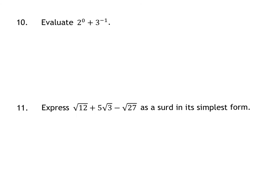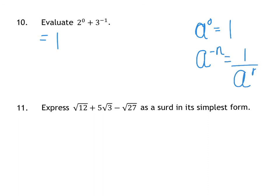Question 10 is an indices question. The first part uses the rule that A to the power of 0 is just 1 — anything to the power of 0 is 1. So 2 to the power of 0 is 1, so the first bit is just 1. The second bit uses the rule that if you have a negative power, you can write that as 1 over A and make your power positive. So that's 1 plus 1 over 3, which gives you 1 and 1 third, or 4 thirds.